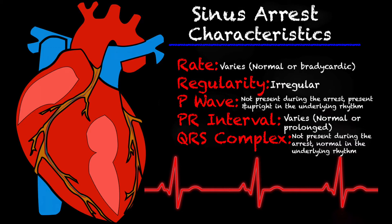The P waves are not present during that flat line or during that arrest, but they are present and upright during the underlying rhythm. The PR interval varies — it could be normal, it could be prolonged, or it could not be there during the arrest. QRS complexes are also not present during the arrest, but normal in the underlying rhythm.